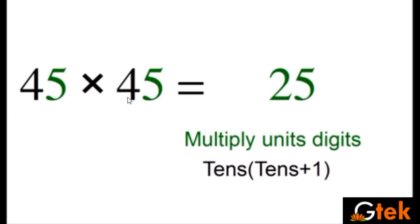My tenth digit is 4. So 4 into 4 plus 1 is 5. So 4 into 5 is 20.